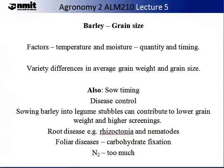Other considerations for grain size include sowing timing — you need to get this right. If it's too early, you will have the risk of wind damage and therefore won't obtain the optimal size. Disease control is another important component. Sowing barley into a legume stubble can contribute to lower grain weight and higher screenings. You have to watch for certain diseases, particularly rhizoctonia and nematodes. Foliar diseases can also result in reduced grain size as they reduce the carbohydrate fixation capabilities of the plant.